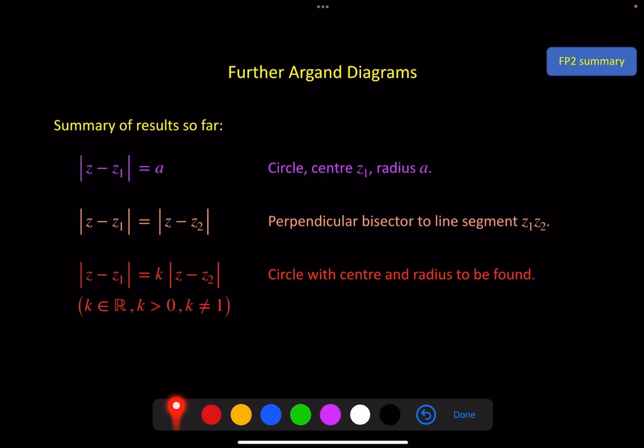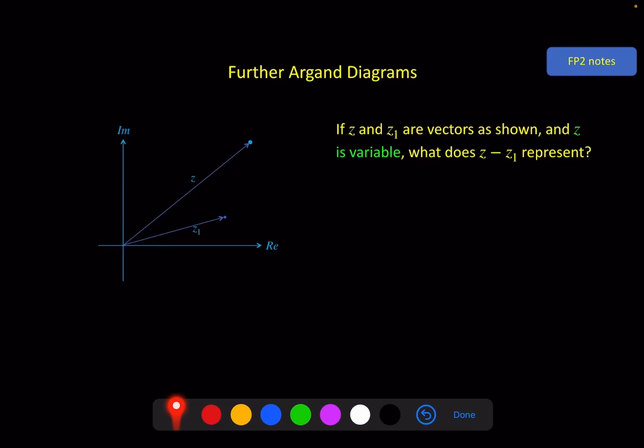So here are our three results so far. Standard result number four. So here, if z is variable, what does z minus z1 represent? Here is z1, it's a fixed point. z over here is variable. So if you remember your vector work, you should remember that z minus z1 is the vector that goes this direction.